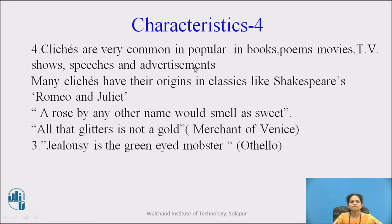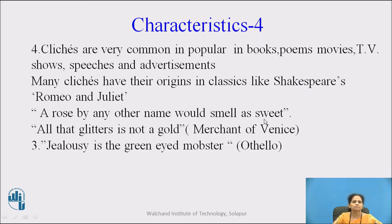The next characteristic: glitches are very common and popular in books, poems, movies, TV shows, speeches and advertisements. Many glitches have their origins in classics like Shakespeare's Romeo and Juliet. For example: 'A rose by any other name would smell as sweet.' Then 'all that glitters is not gold,' from Merchant of Venice. Next, 'Jealousy is the green-eyed monster,' from Othello.